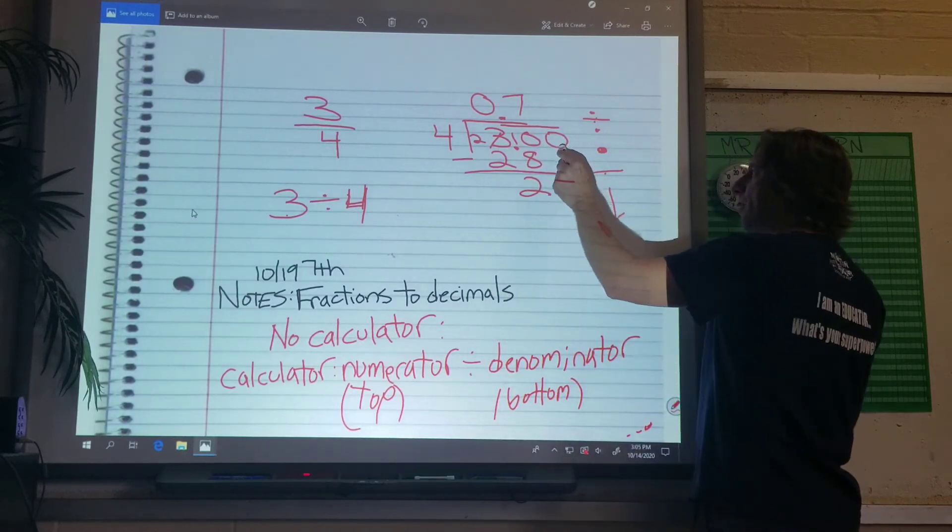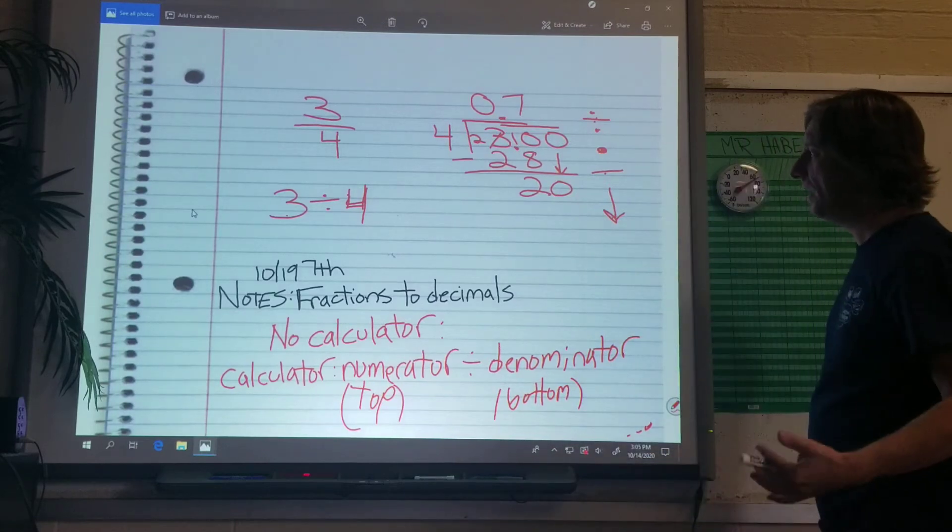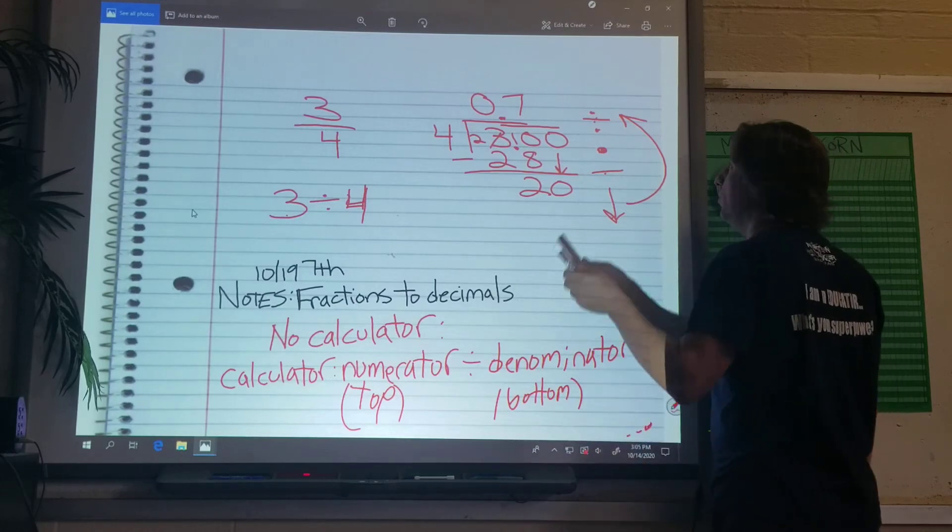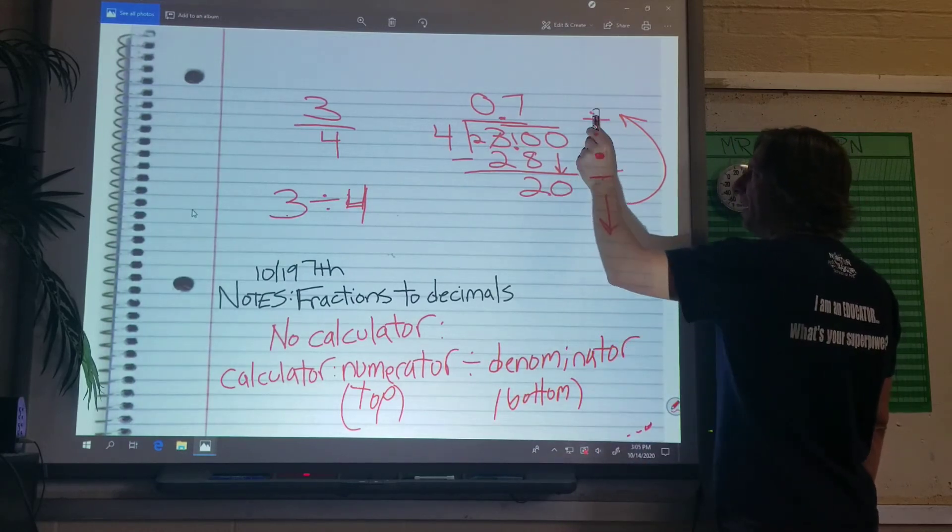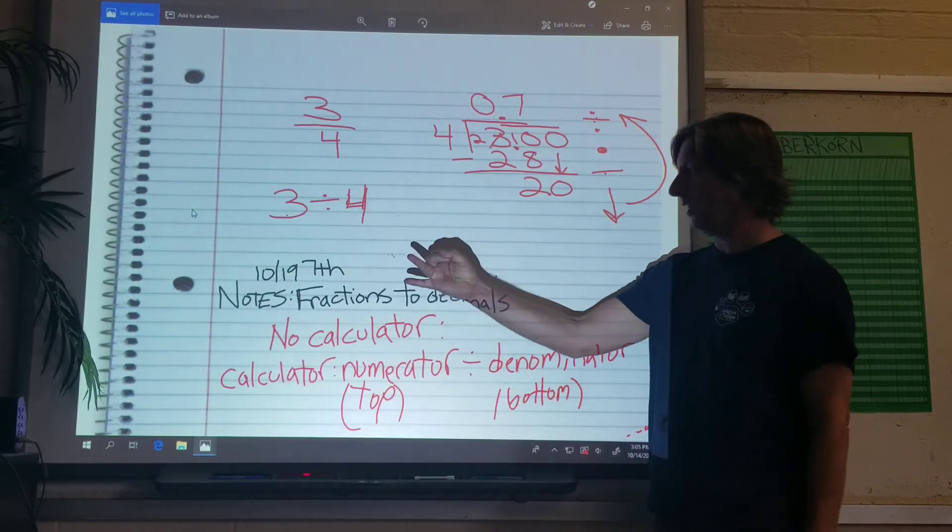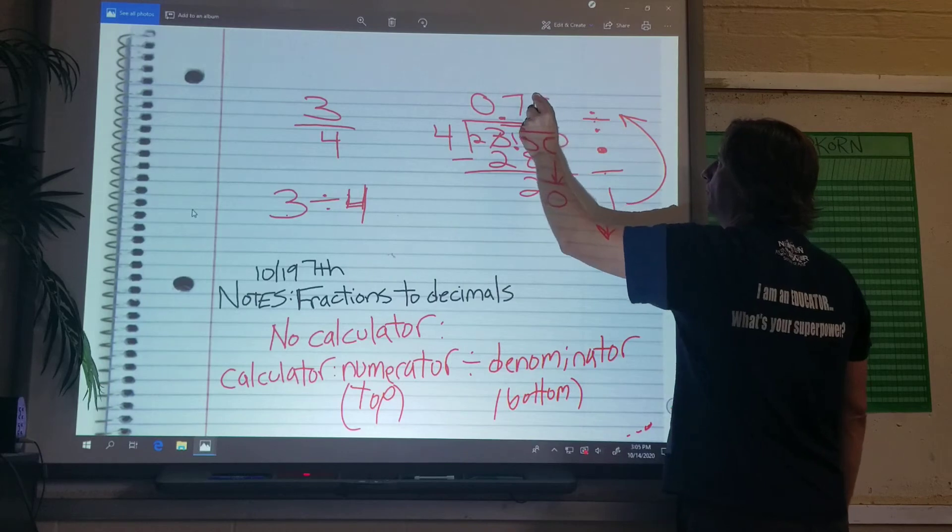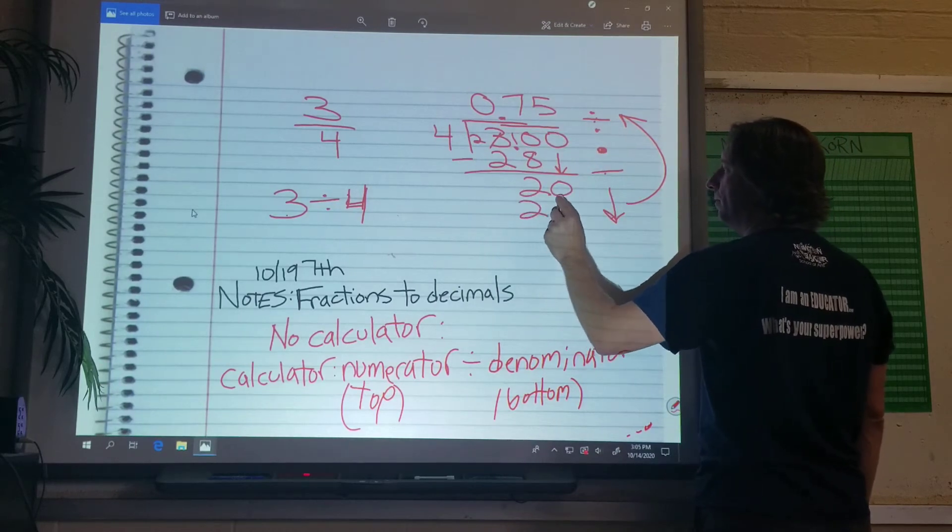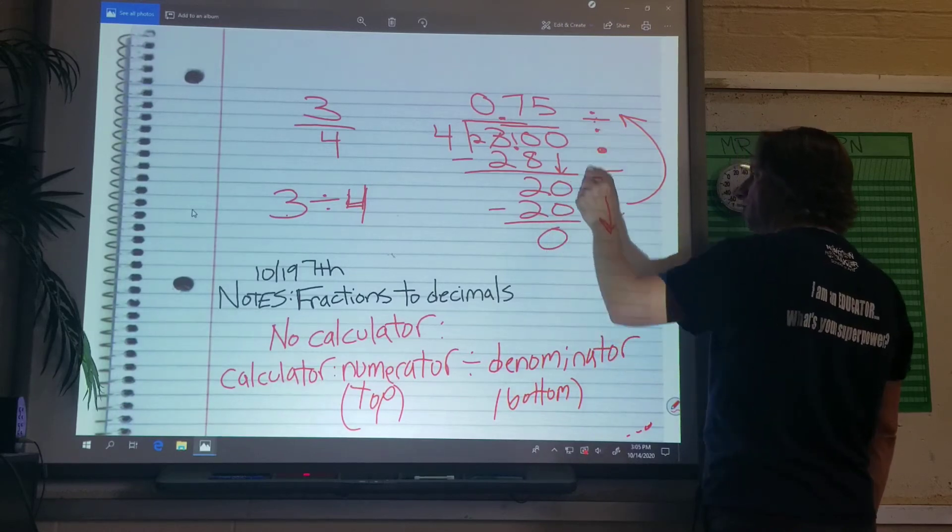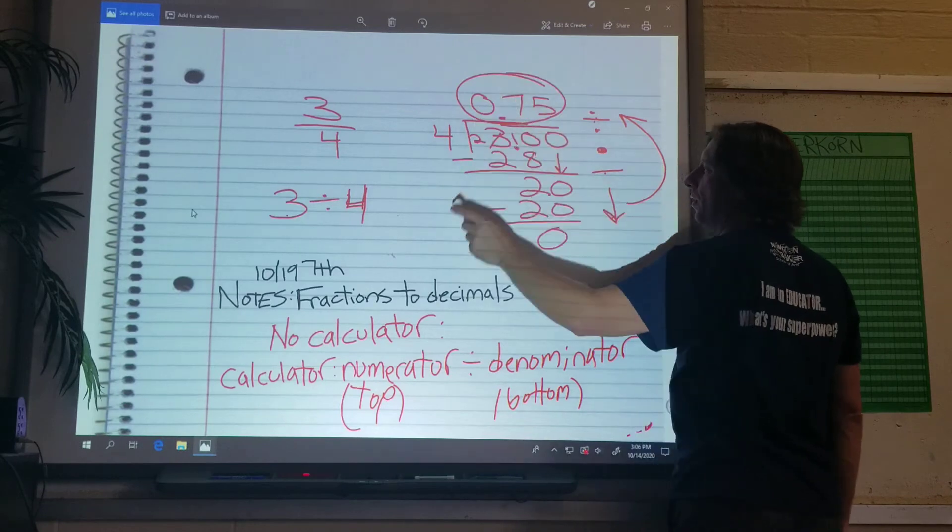Okay, next step is bring down. I'm going to bring the zero down and set it next to the two. We're not done yet. Go back to the top and do it again, okay? Always work with the number we just wrote. Divide, twenty. Will four go into twenty? Yes. Four, eight, twelve, sixteen, twenty. Five times. Multiply, five times four is twenty. Subtract, we get zero. There's nothing else to bring down, so we're done. So my answer is zero point seven five.